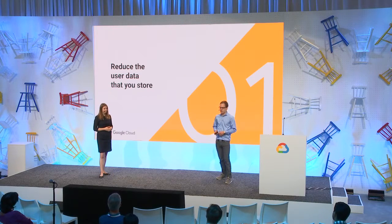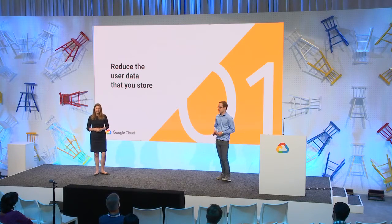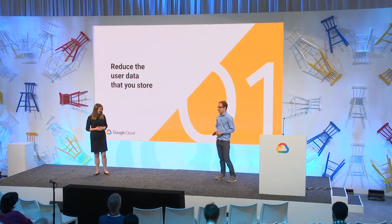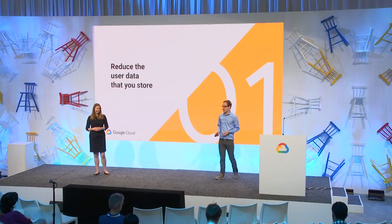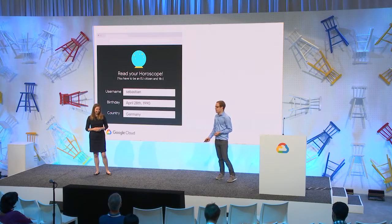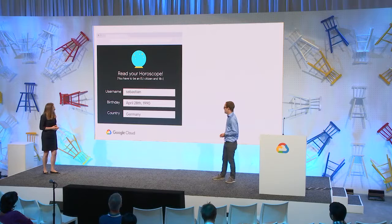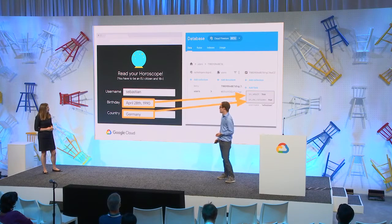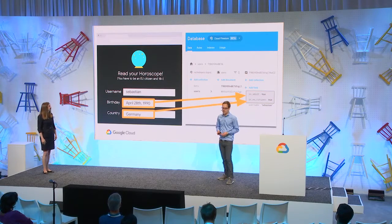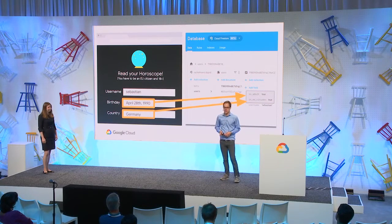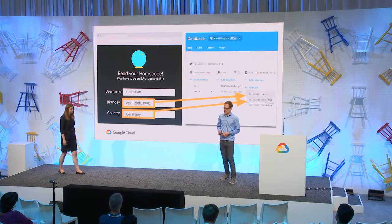Rachel and I want you to design your apps for privacy from the very first line of code. The easiest way to do this is, of course, to not store any data — but let's stay realistic and only save the data that we need. For example, if we want to make sure our users are European citizens over 18, instead of storing the user's full birthday and country of birth, we only need to store whether they meet our two criteria. As you design your app, think about what data you need and how long you need to store it.